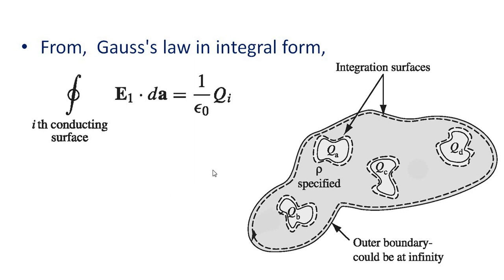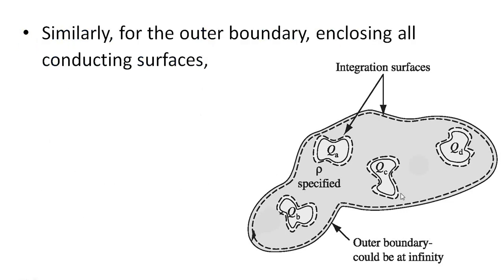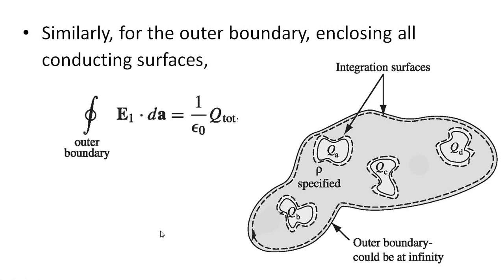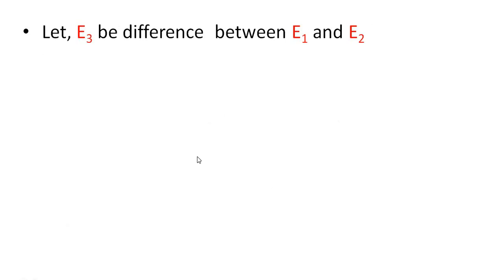From Gauss's law in integral form, the closed surface integral of E dot da equals Q over epsilon-zero. We have two fields E1 and E2, so the closed surface integrals of E1 dot da and E2 dot da over each conducting surface, and over the outer boundary enclosing all conducting surfaces, equal 1 over epsilon-zero times Q-total. Let E3 be the difference: E3 equal to E1 minus E2.